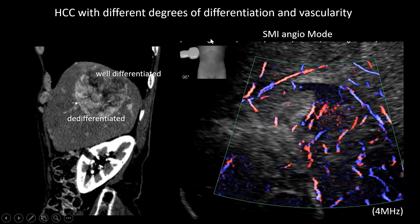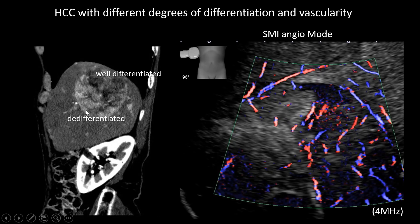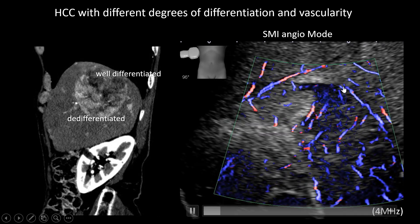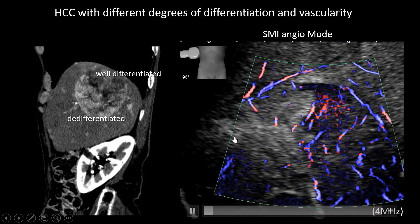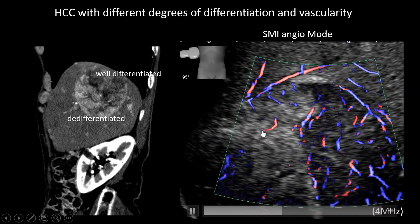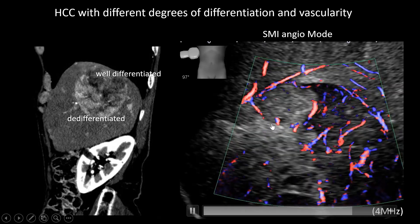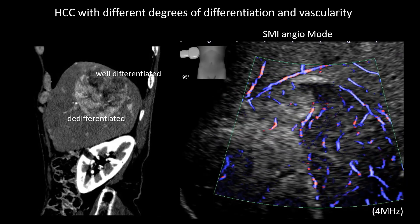This is a case of HCC with different degrees of differentiation and vascularity. This part is rich in fat, well-differentiated, and with less vascularity. This other part is a dedifferentiated area with rich vascularity. Using SMI Angio Mode, you can see the less vascular structure in the well-differentiated area with more fat.